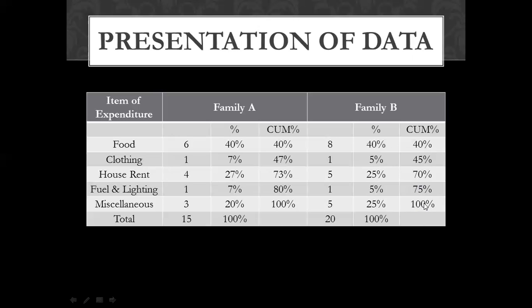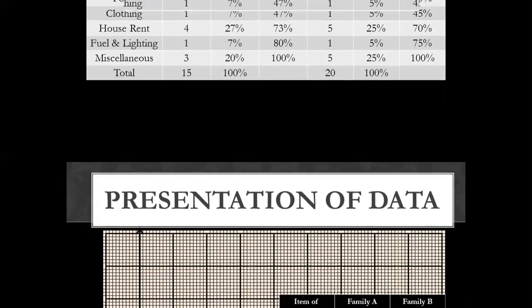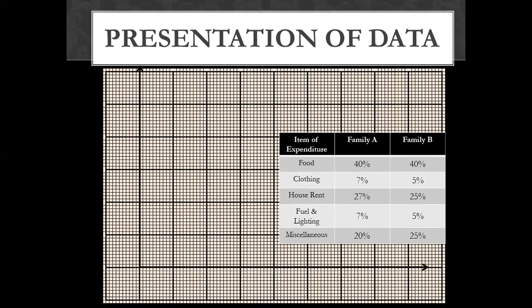We have to make 100% bars and show all values in them. We have two variables: family A and family B. We have to show all the different items of expenditures in the divided shape. First, we will draw the X-axis and Y-axis, then decide our scale — 100% accordingly.